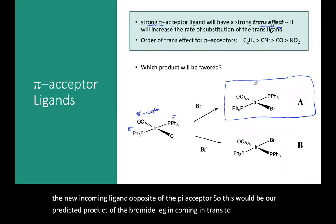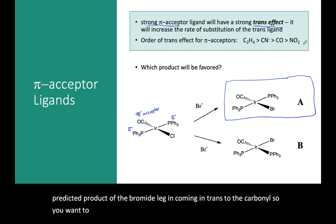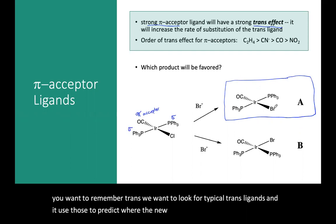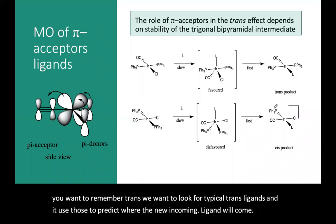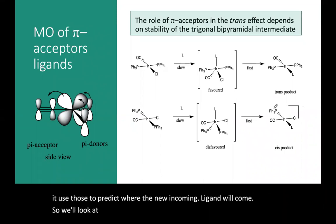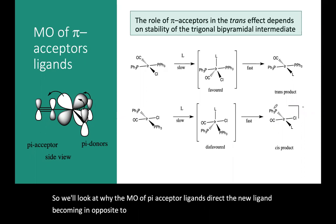To summarize: we want to remember the trans effect — we look for typical trans-directing ligands and use those to predict where the new incoming ligand will come. We'll look at why the MO of pi acceptor ligands directs the new ligand to come in opposite to that pi acceptor.